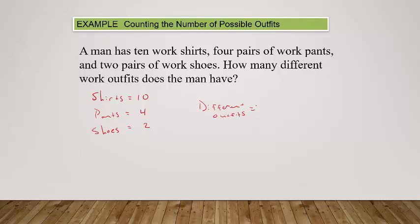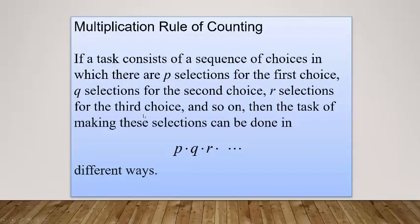How you would tackle this: notice how there's three things here where there's ten selections for the first thing, four selections for the second thing, two selections for the third thing. It's really just this multiplication of counting.